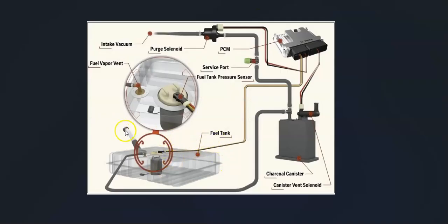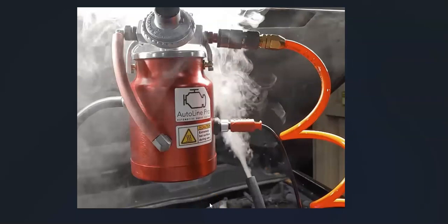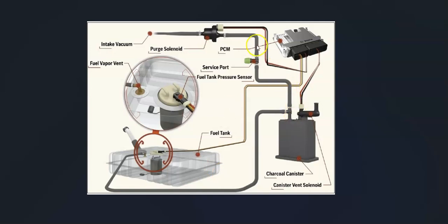If you've checked the gas cap, charcoal canister, vent valve, and purge valve solenoid and everything looks good, then very likely there is a leak somewhere inside the system. Go around and look at all the hoses to see if anything looks cracked. Sometimes it can be difficult to find a leak in the EVAP system. If you took it to a mechanic, they'd feed smoke into the EVAP system and wherever the smoke came out, that's where the leak is. There are low-cost smoke machines on Amazon or eBay, and you can also make one yourself for around $5 to $10 — there are YouTube videos showing how.